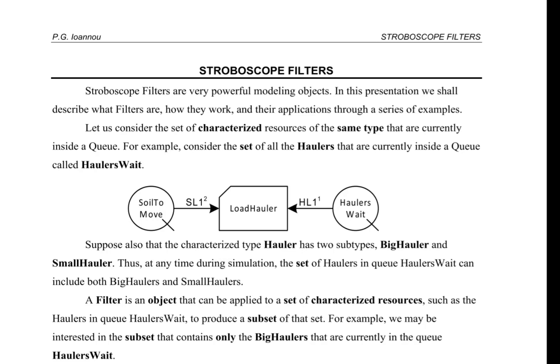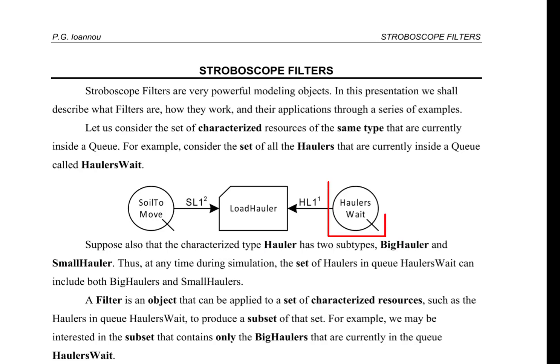Let us consider the set of characterized resources of the same type that are currently inside a queue. For example, consider the set of all the haulers that are currently inside a queue called hauler's weight. Suppose also that the characterized type hauler has two subtypes, big hauler and small hauler. Thus, at any time during simulation, the set of haulers in queue hauler's weight can include both big haulers and small haulers.